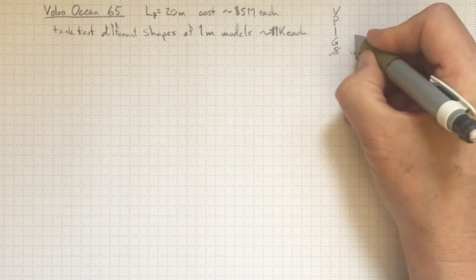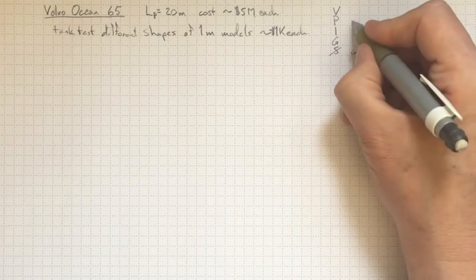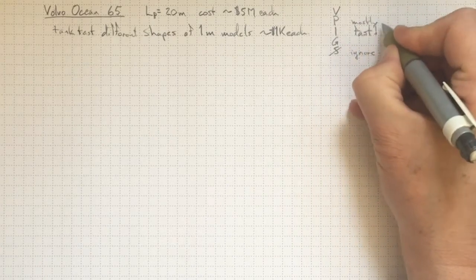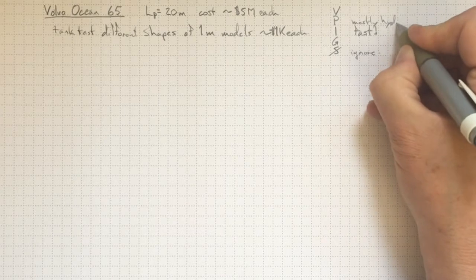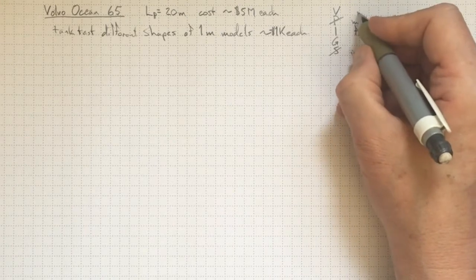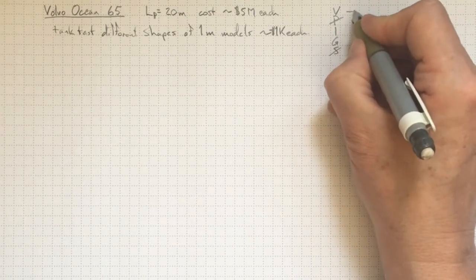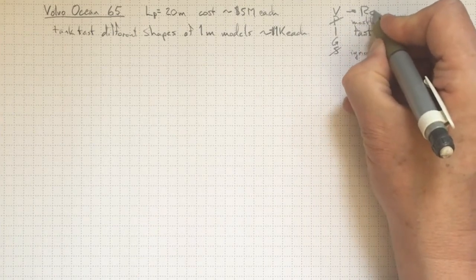The whole point of these things is to go fast, so inertia is going to be important. The pressure forces, they're going to be mostly hydrostatic, keeping the boat floating. And the viscous forces will account for friction along the walls. So we better at least think about the Reynolds number.